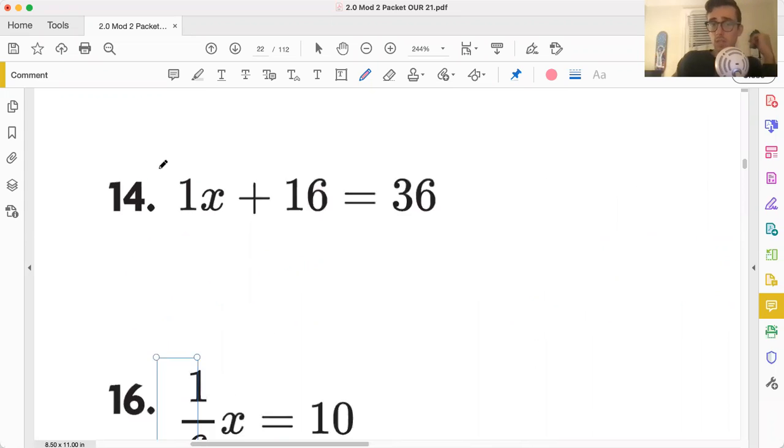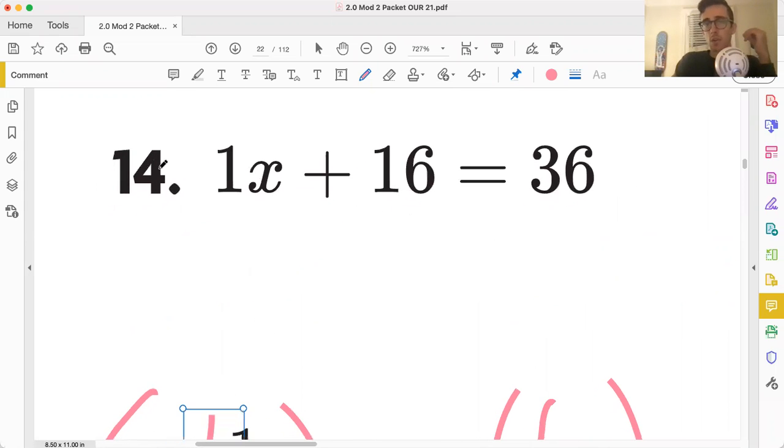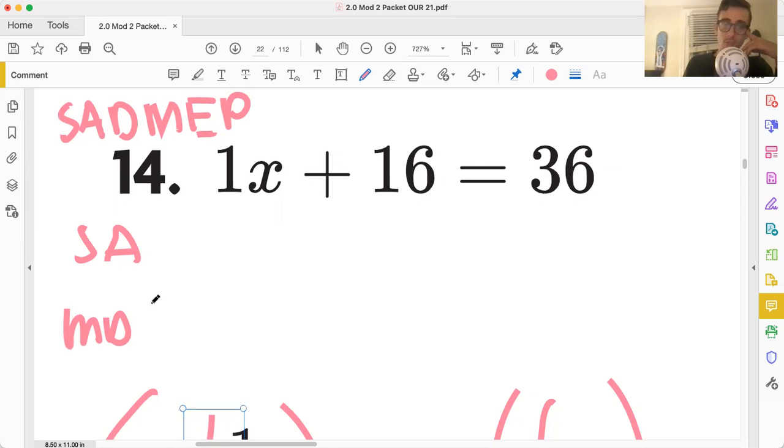I will talk at length about problem 14, though. So this is the first time I think we're seeing a two-step equation. It's nothing we can't handle, though. A quick way to help us is SADMEP. This may look like PEMDAS. However, it's kind of the way that we should approach problems like this, where most likely our first step is going to deal with subtraction or addition, and then we kick into multiplication or division.